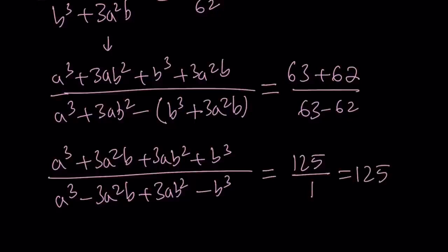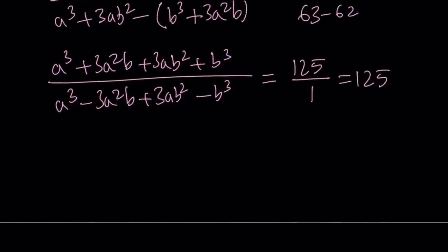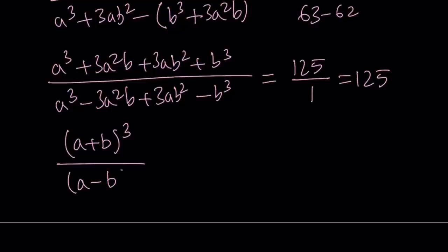Now, what do we have in the numerator and denominator? Well, if you are familiar with the binomial theorem, especially for the case n equals 3, you'll realize that the numerator is equal to (a plus b) cubed. And the denominator is just a different version of the same thing — if you replace b with negative b, the odd powers of b become negative, and you get (a minus b) to the third power. And as we know, this equals 125.